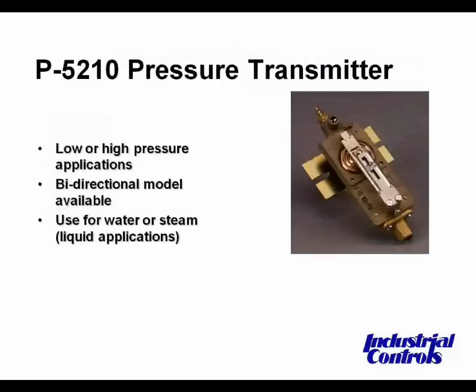Next is a pressure transmitter. This can be used in high or low-pressure applications. There are even some bi-directional models available that can be used for water, steam, or air pressure applications. It looks very similar to what we've seen before, but the air connection for main air to the transmitter is at the top at the barbed connection. The bottom connection is a 1⅛-inch NPT pressure connection for whatever condition is being measured — air, steam, or water.